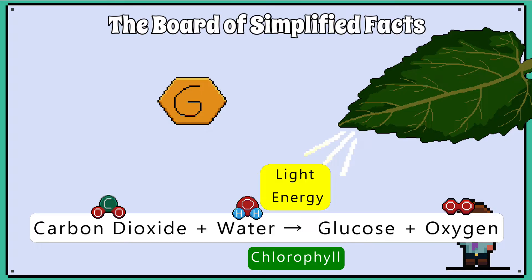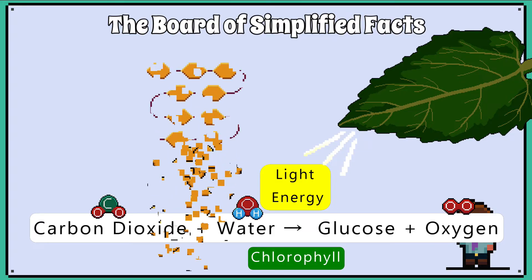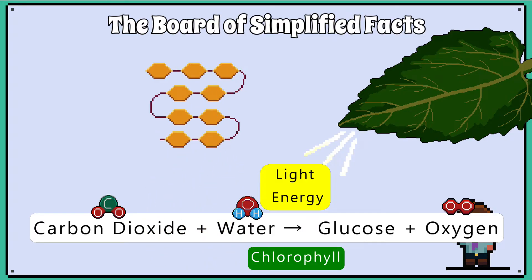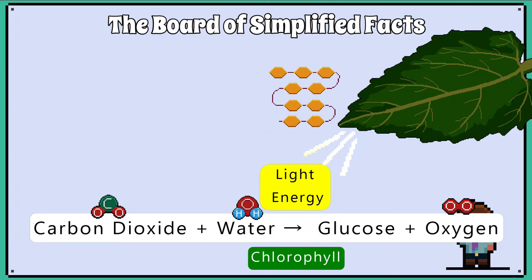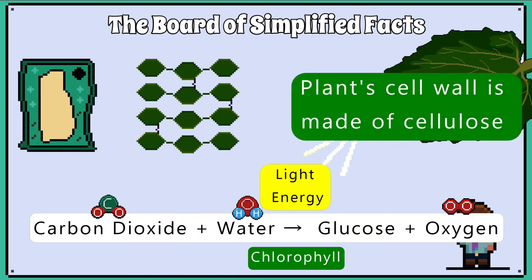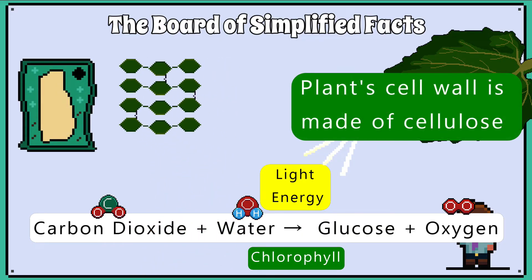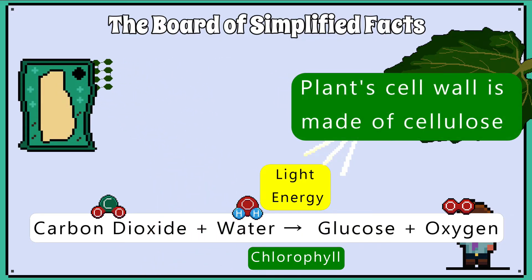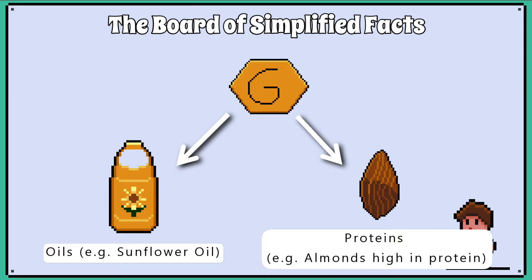Plants can store energy by converting glucose into starch, so the plants can meet energy demands when photosynthetic activity is low. Glucose can also be converted into cellulose, which is what plant cell walls are made of. Plants can also use the glucose to make proteins and oils.